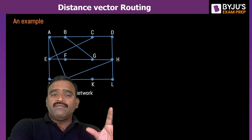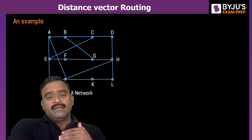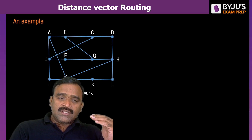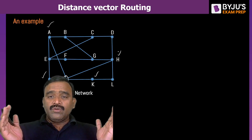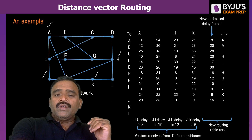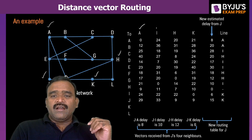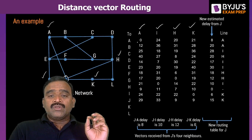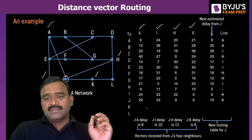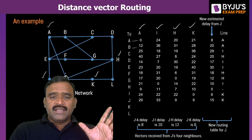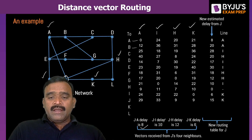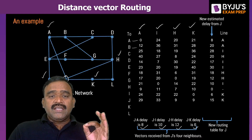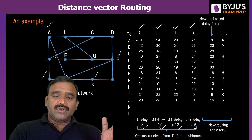Let us now take a domain of 12 routers: A, B, C, D, E, F, G, H, I, J, K, L. I am targeting router J. The neighbors of router J are A, I, K, and H. We get information from all four neighbors. J to A delay is 8, J to I delay is 10, J to H delay is 12, J to K delay is 6. These are the present delays estimated by sending testing packets. Using this we can build an estimated new routing table for router J.